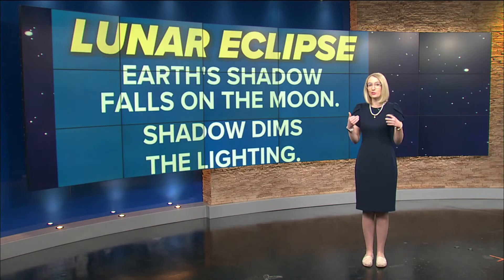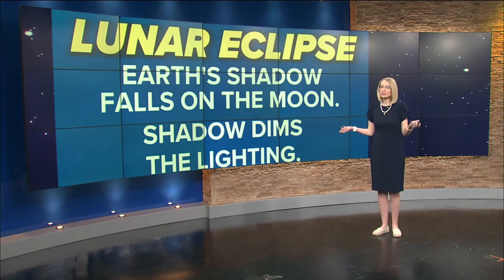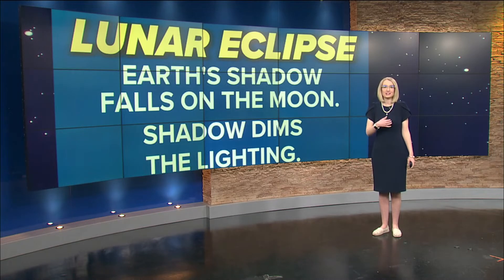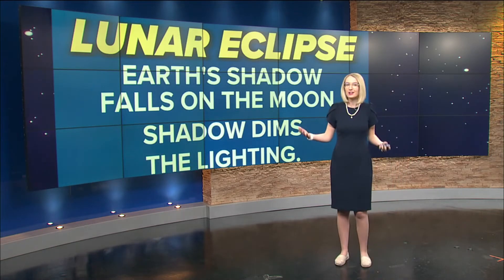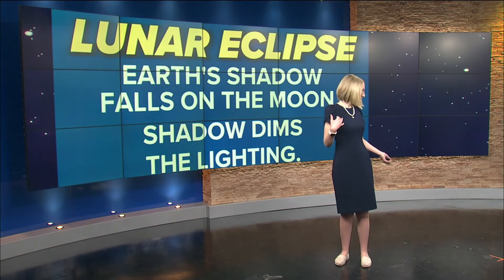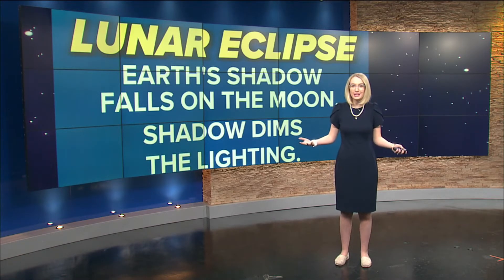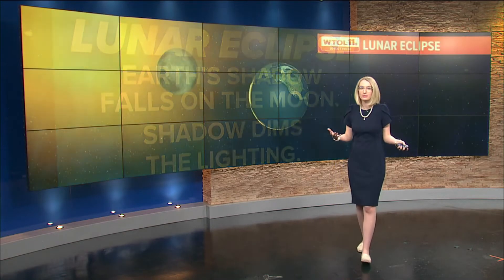First off, a lunar eclipse. This is where the earth is casting its shadow onto the moon, and that shadow is going to dim the lighting that makes it to the moon. It's just like you and I when we're outside on the sidewalk on a sunny day and that sun is shining down — it's going to leave a shadow. That happens throughout the solar system with our planets, causing that eclipse.